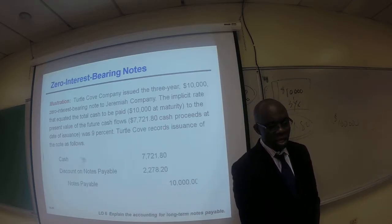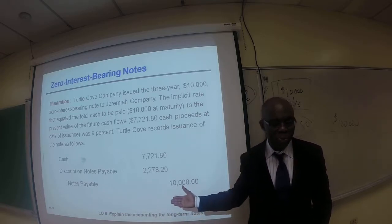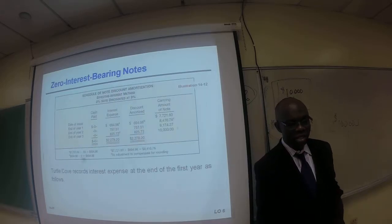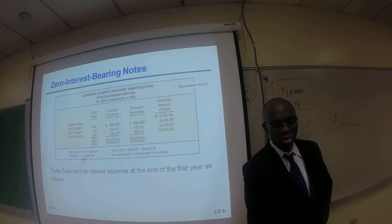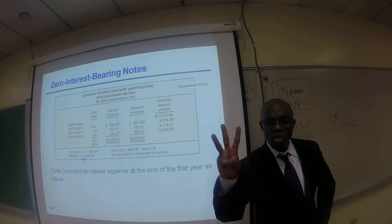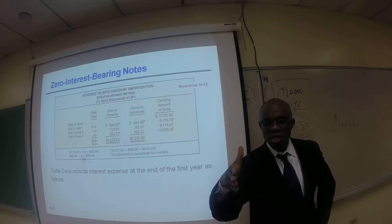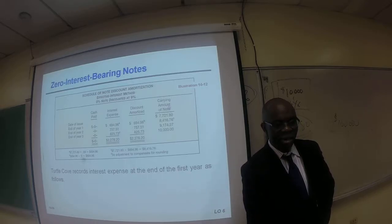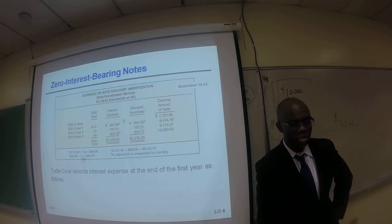Here is the journal entry: we credit notes payable for $10,000, debit cash for $7,721, and the difference of $2,278 is discount on note payable. Look at this schedule: cash paid every year is zero. However, the $2,278 interest has to be allocated over the three-year period so the matching principle is not violated. And as you can see, the carrying amount of the note increases every year based on the amortization of the discount.